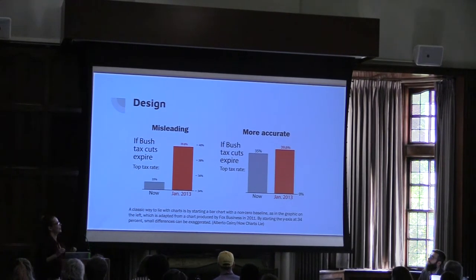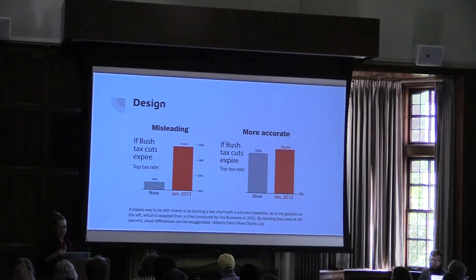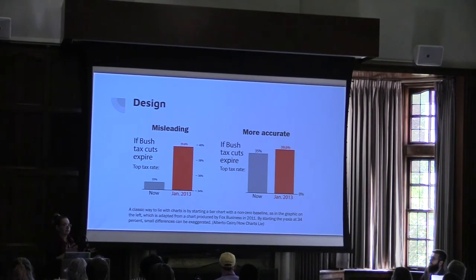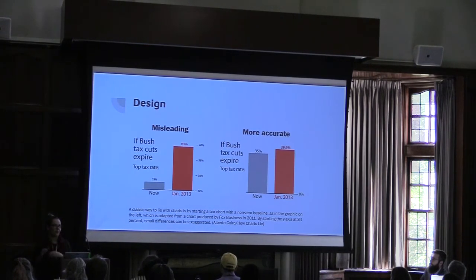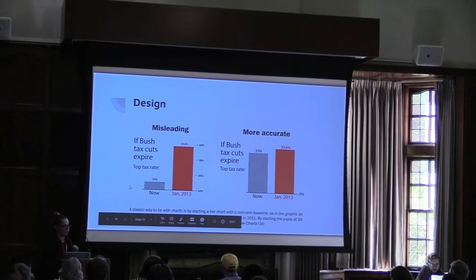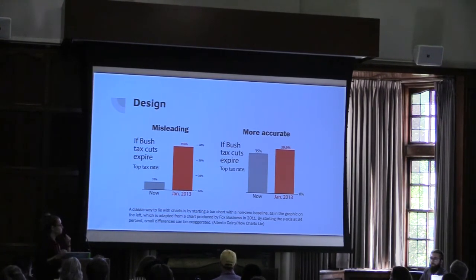Another ethical consideration is the design — how you're actually presenting the data, including color, size, shape, and format. There are cases where people use these powerful tools to influence people for not the best reasons, and there are well-intentioned people who suffer from common pitfalls. One common one is changing the baseline — the same exact data showing 35% and 39.6% looks very different when the baseline is changed to 34% versus starting at 0%. Just make sure the story you're telling is accurate.